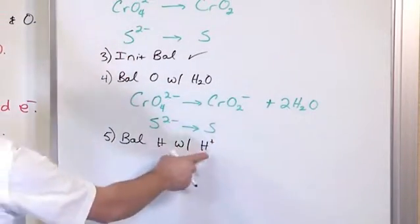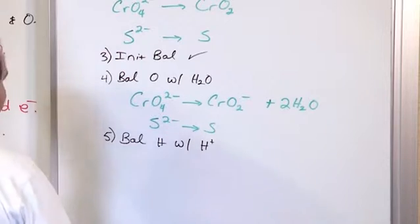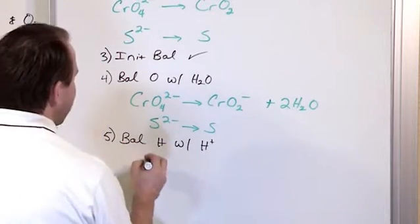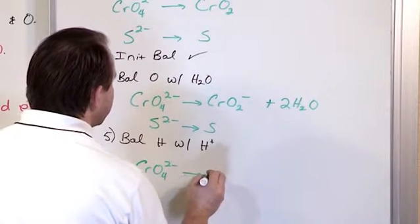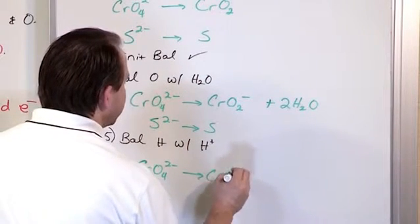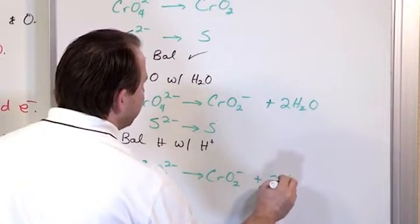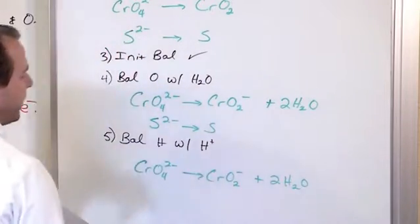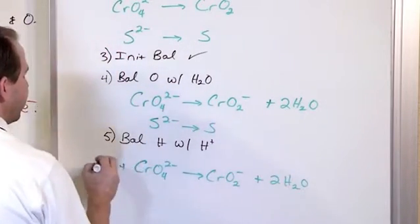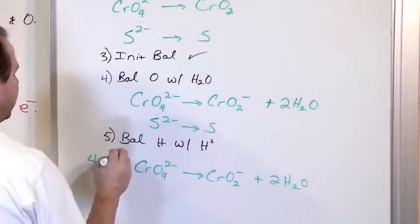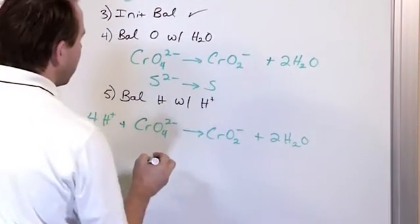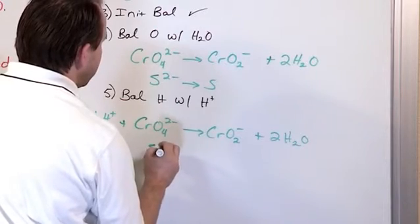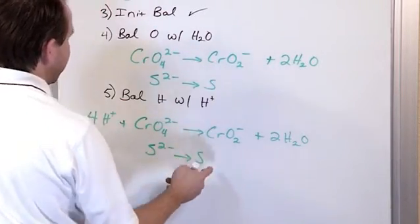We know that we don't have these in solution, but we just pretend because it works out mathematically. So we have CrO4 2- yields CrO2- plus 2H2O. We have four hydrogens there. That means we're going to need 4H+ here. And again, we know these aren't real, but we're using them to further our balancing. We have S2- going to sulfur there. There's no hydrogen.